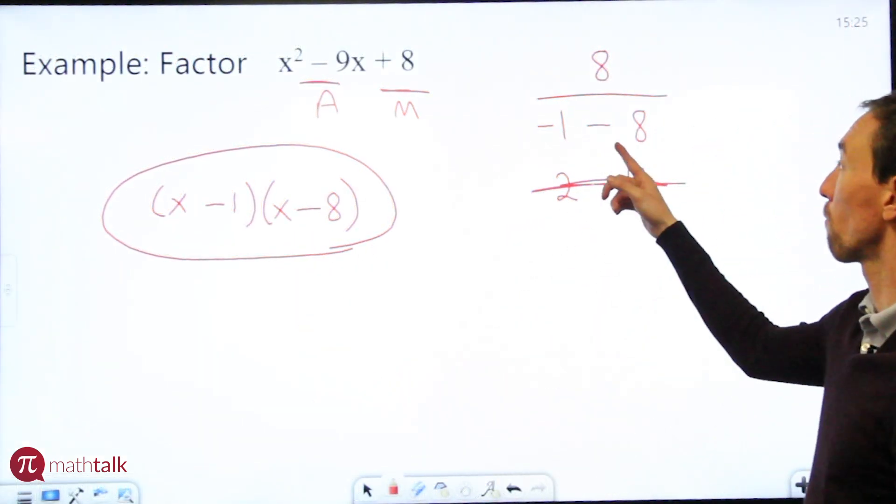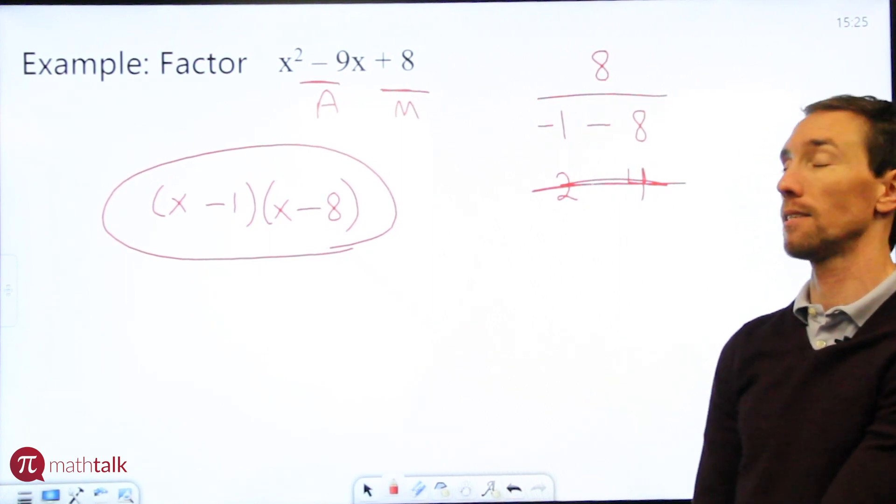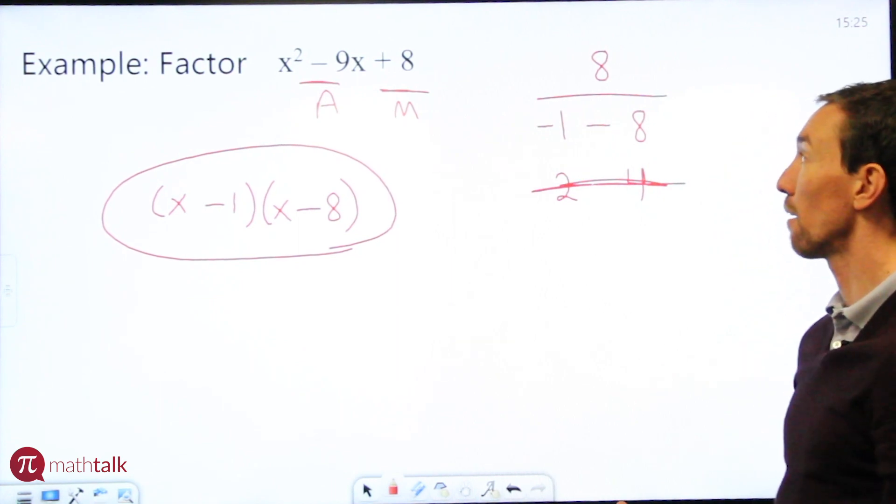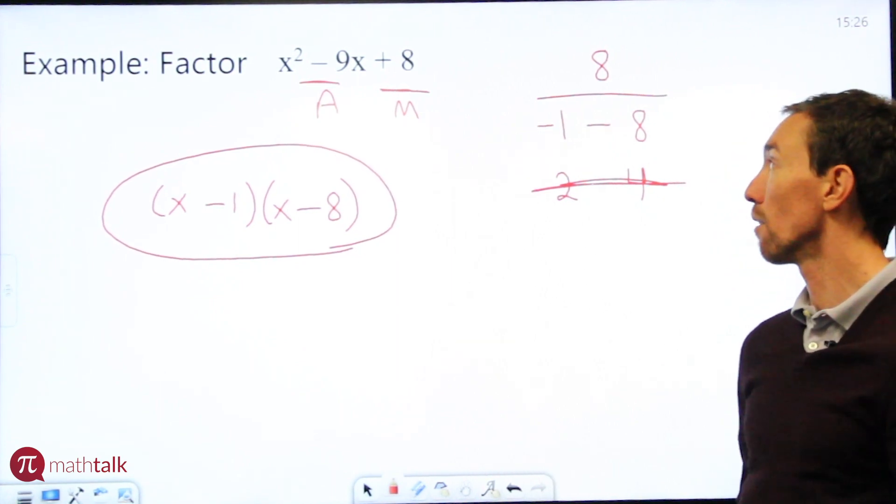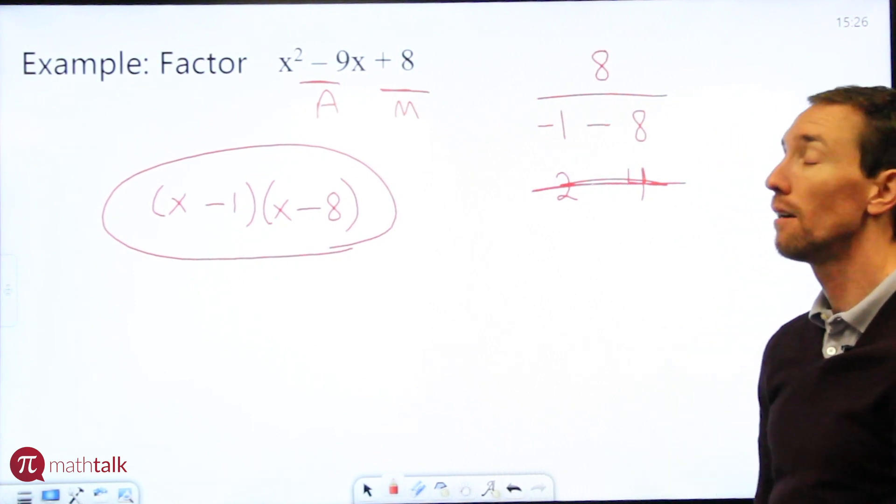Now the reason these can both be negative is because when you multiply two negatives together you get a positive number. That's why this at the end is positive 8. And when you add two negative numbers your answer is still negative. Negative 1 plus negative 8 is negative 9.